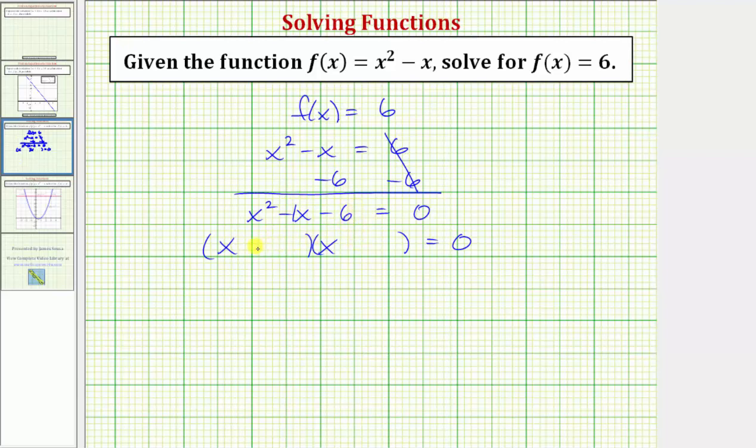So our two factors are x minus three and x plus two, and this product is equal to zero when x minus three equals zero or when x plus two equals zero. Solving for x, we have x equals positive three by adding three to both sides, and x equals negative two by subtracting two on both sides.